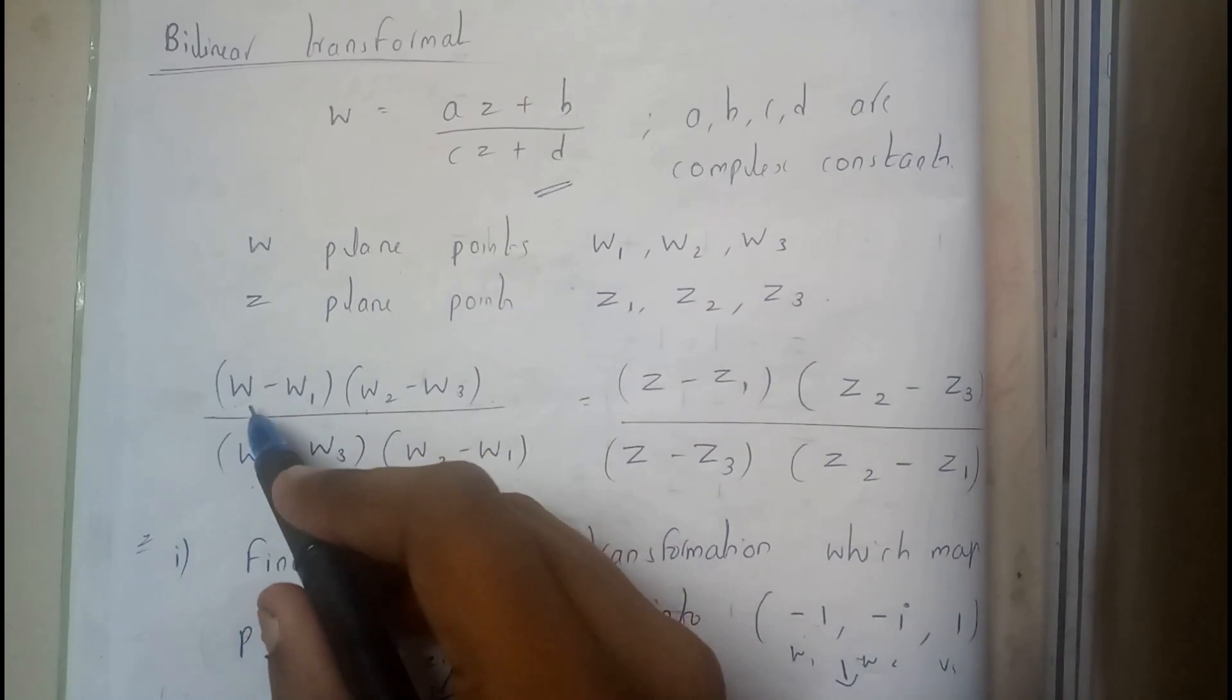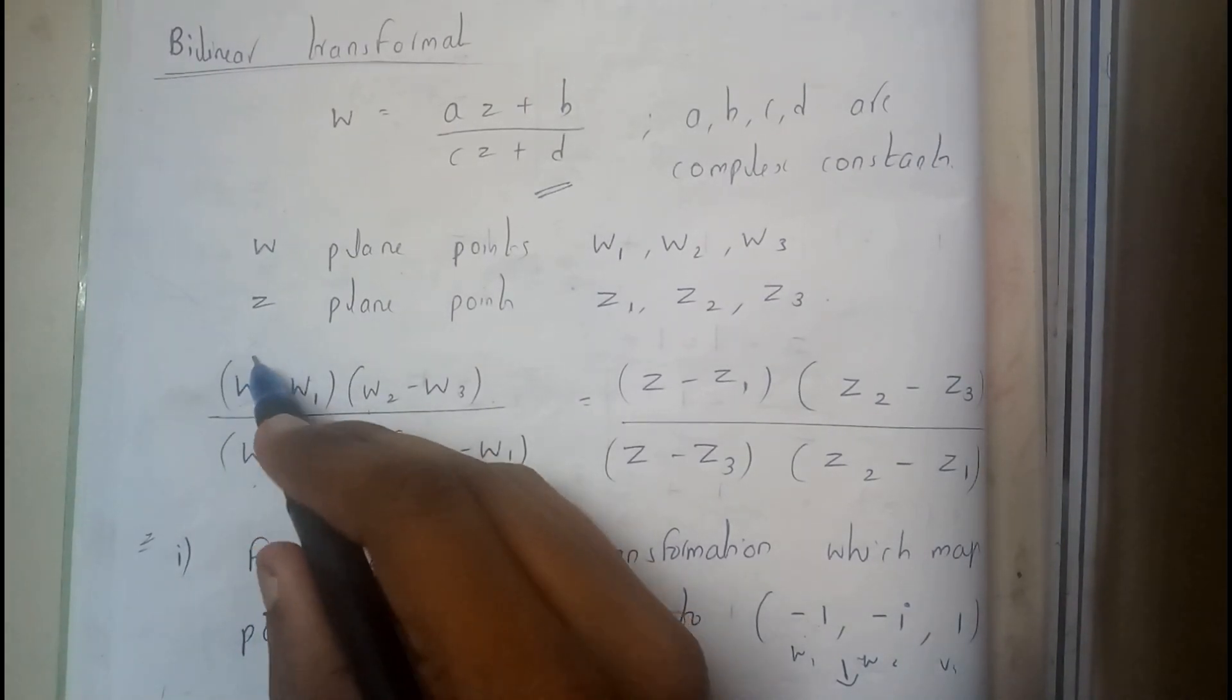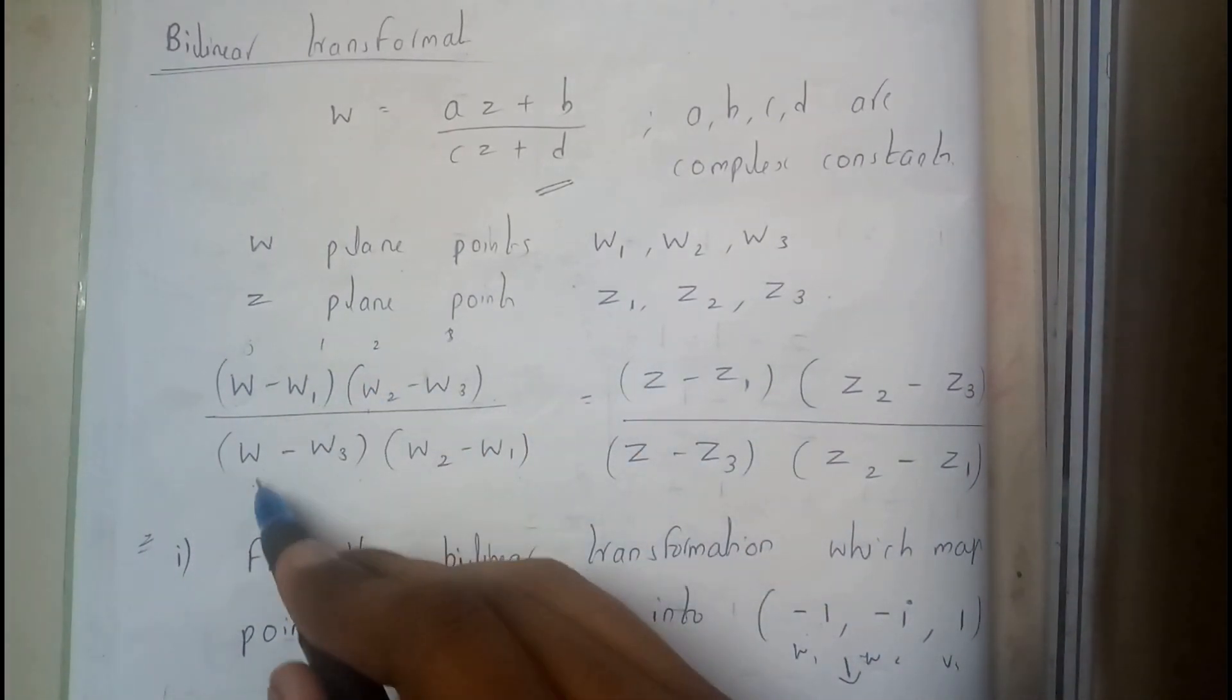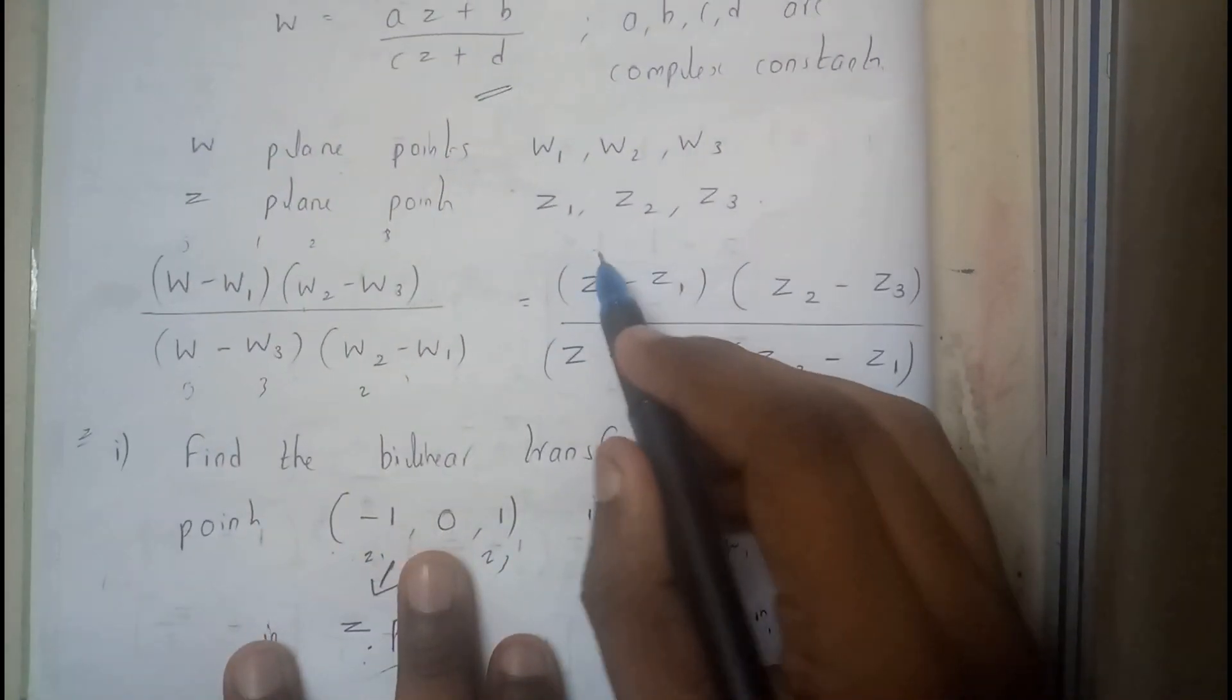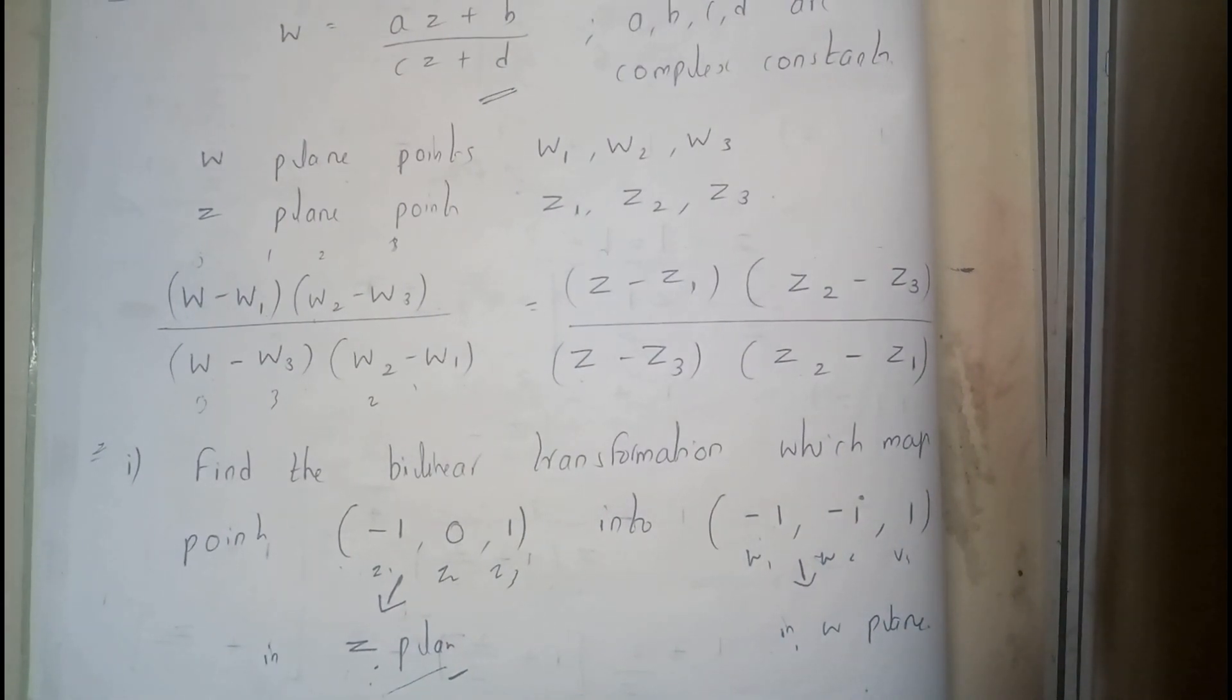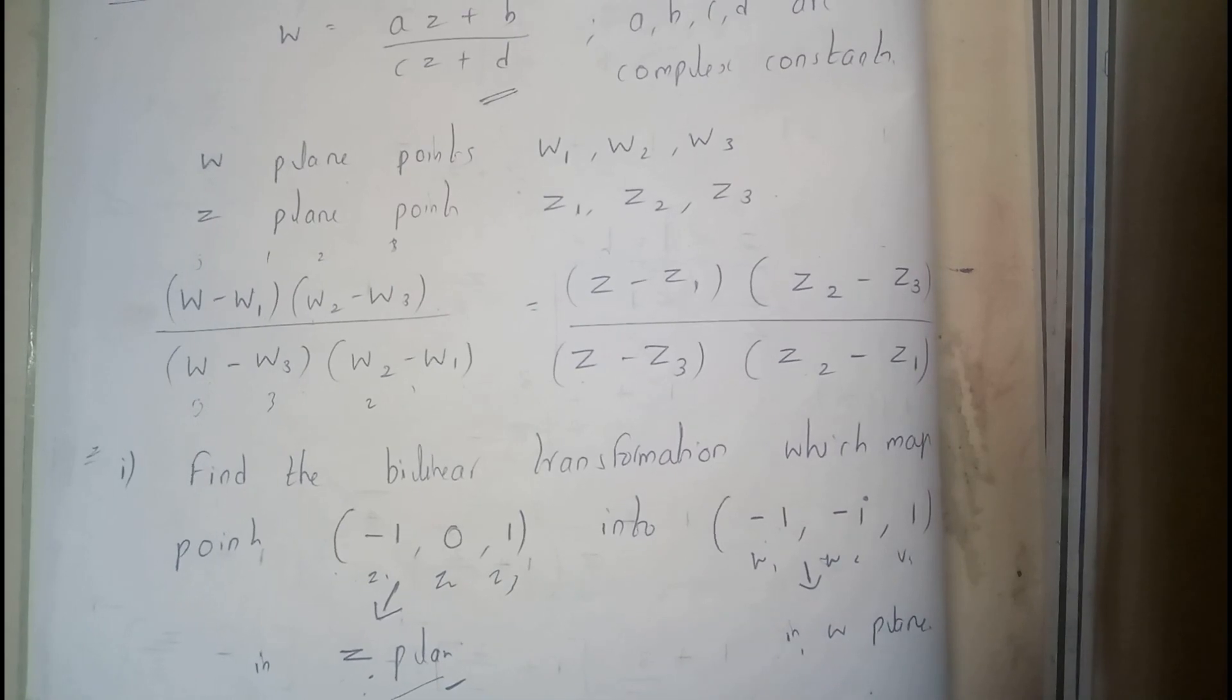If you have a confusion of remembering this formula, I will be saying you a simple trick. Assuming this w as w node, so 0, 1, 2, 3 will be the subscripts here. 0, 3, 2, 1. Here also 0, 1, 2, 3, 0, 3, 2, 1. That's it.